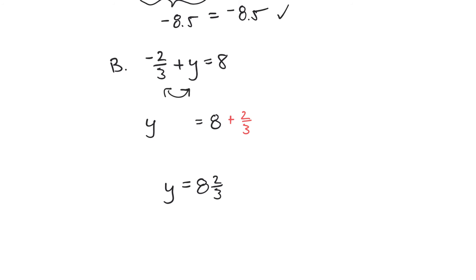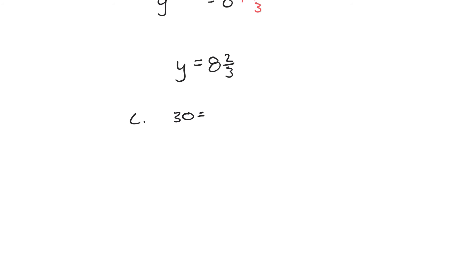Okay. And for problem C, that is 30 is equal to negative 0.5 times a. And a is some other variable. It represents a number that we don't know yet. But we're going to solve for a.